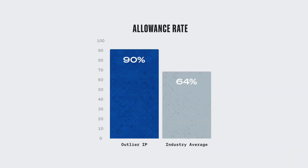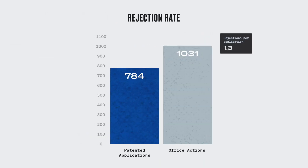Here's some data about our allowance rates and our efficiency stats — we get our patents allowed much more quickly and efficiently than most of our competitors. We do this by being really good patent practitioners, but we also do it with our data analytics, which incrementally improve our odds of getting a patent allowed and getting it allowed more efficiently.